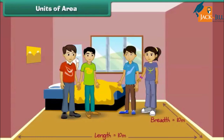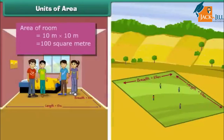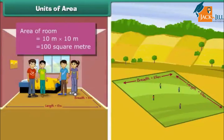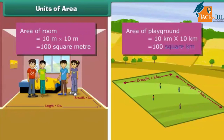How many children can stand in a square room of side 10 meters? And how many children can stand in a square playground of side 10 kilometers? It is clear that more children can be adjusted comfortably in the playground. The area of the room is equal to 100 square meters, while the area of the playground is equal to 100 square kilometers. Thus, square kilometer is a bigger unit for measuring area than square meter.